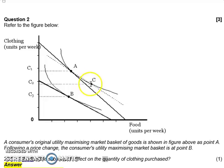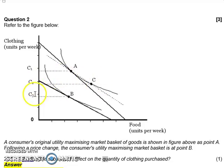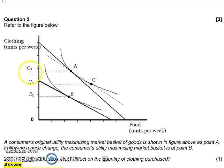The income effect is the movement from C to B — how substituting clothes for food, or food for clothes, affects purchasing power as a result of the price change. So C2 to C3 represents the income effect. The substitution effect is from C1 to C2, and the income effect is from C2 to C3, which is on the new budget line and tangent to the indifference curve. Our total effect is from C1 to C3. Since both the income and substitution effects are positive, this is a normal good.